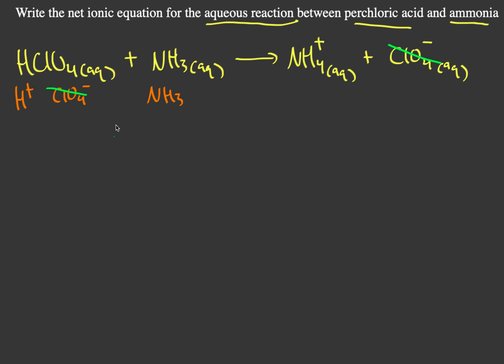And then you just have NH4 plus in your products here. So your net ionic equation would be H plus, which is the proton that perchloric acid donates, in aqueous form, plus your NH3, which is your base, also in aqueous form, and this will form your NH4 plus, which is your ammonium ion in aqueous form.